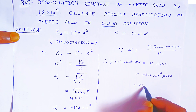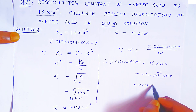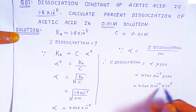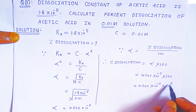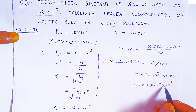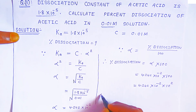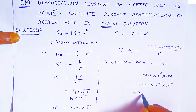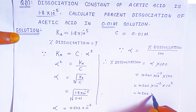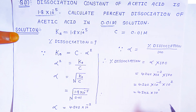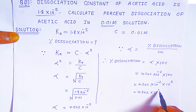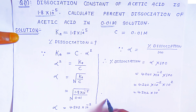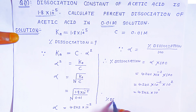So 4.242 into 10 raised to minus 2 multiplied by 10 raised to plus 2 gives 10 raised to 0, which equals 1. So the final answer is 4.242 into 10 raised to 0, that is 4.242. Any number raised to 0 is always 1, so your percent dissociation is 4.242 percent.